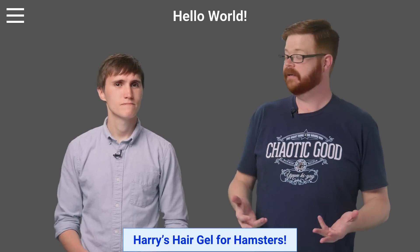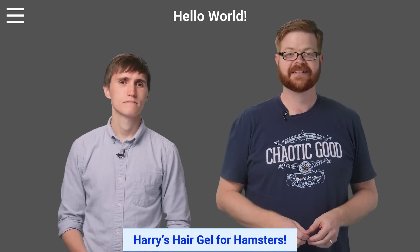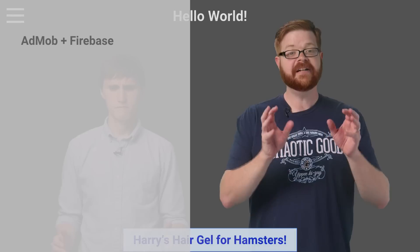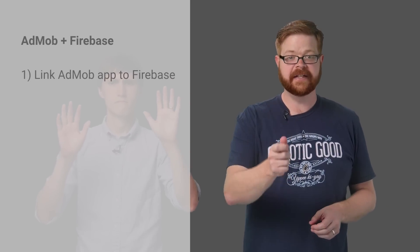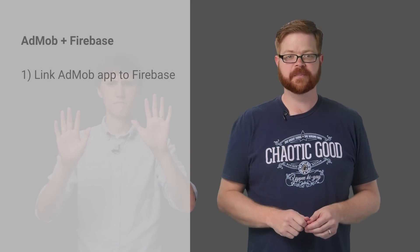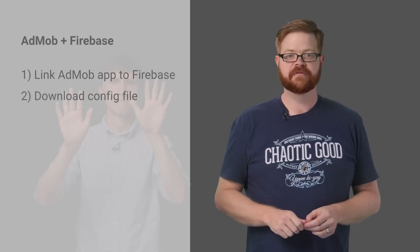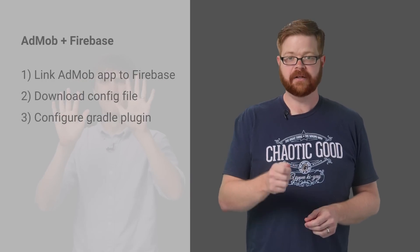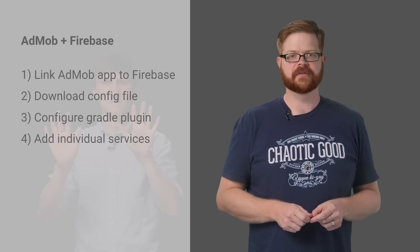Around here I like to list the steps before we do a screencast, so let's break it down for Android. To get an Android app up and running with AdMob and Firebase, you just need to link the app with a Firebase project, download the Firebase config file and include it, configure the Google Services Gradle plug-in, and then add individual services.